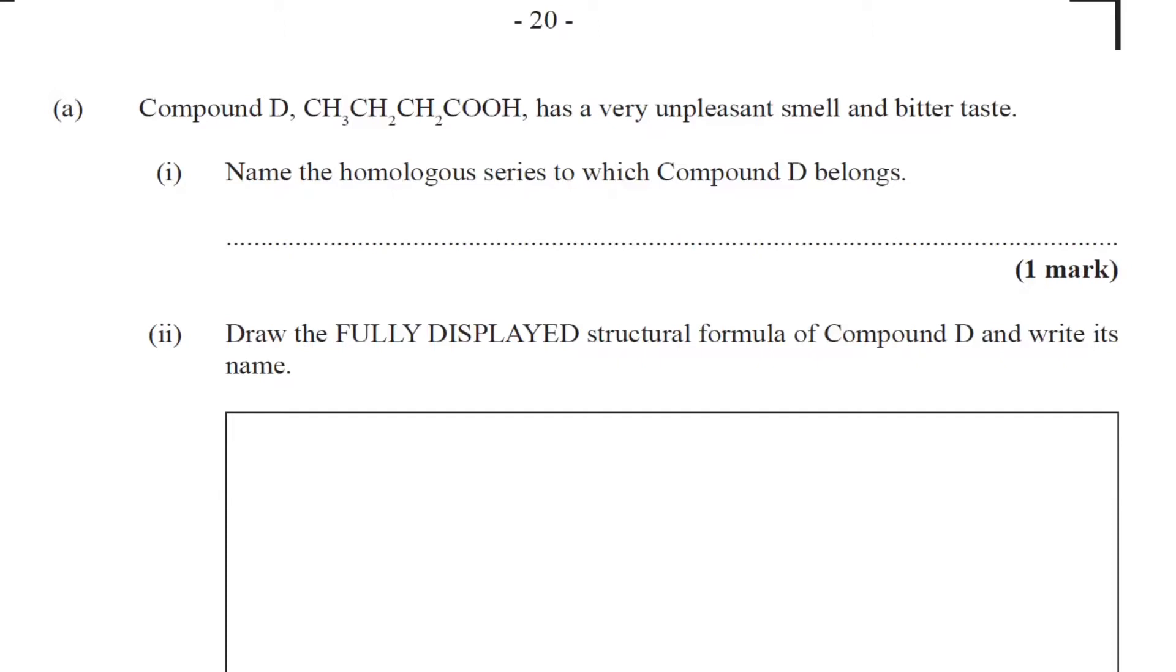Compound D, CH3CH2CH2COOH, has a very unpleasant smell and bitter taste. Bitter? We have COOH. Shouldn't that be a sour or an acrid taste? Anyway, part one: name the homologous series to which compound D belongs.